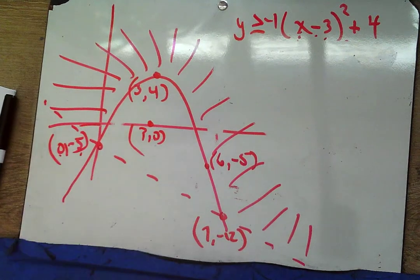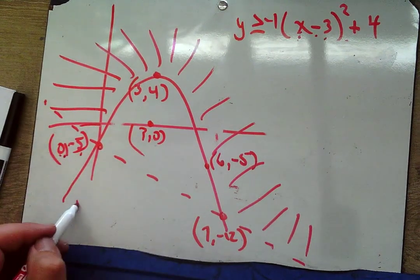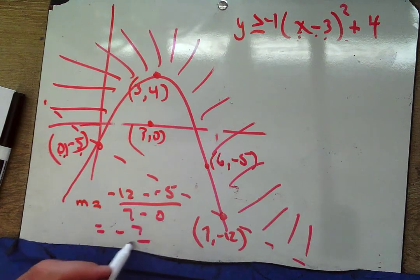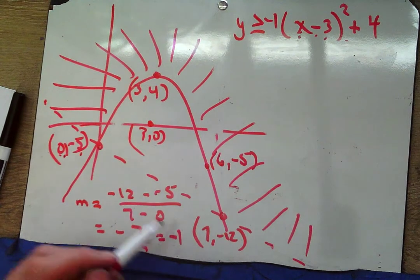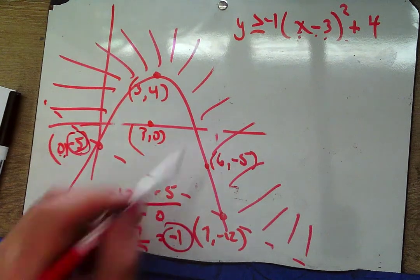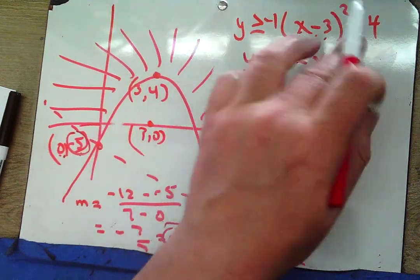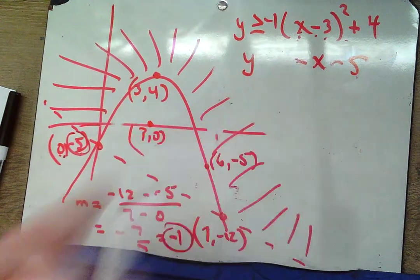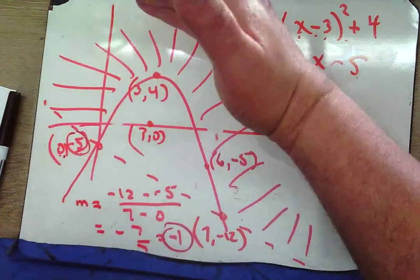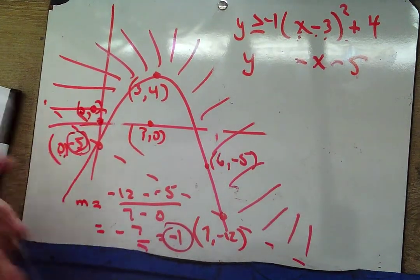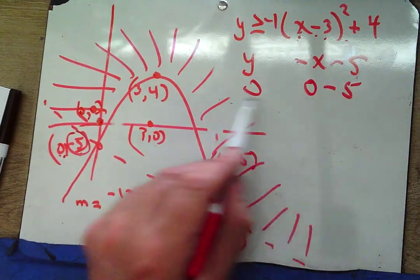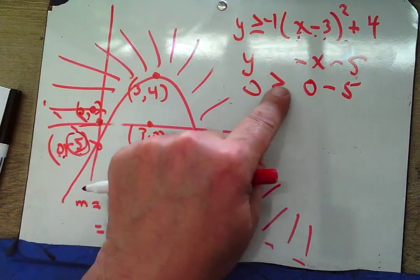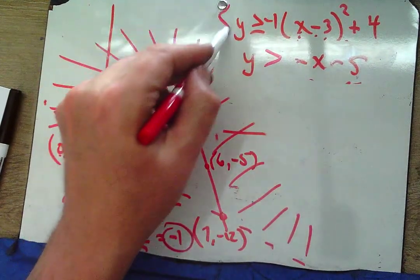For the line: using the y-intercept (0,−5) and the point (7,−12), slope = (−12−(−5))/(7−0) = −7/7 = −1. The line equation is y = −x − 5. Testing (0,0) for the inequality: 0 vs −0−5 = −5. Since we shade above the line, 0 > −5 is 'yes,' so the inequality is y > −x − 5. Note the line is dashed.